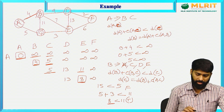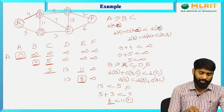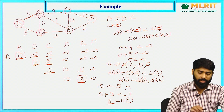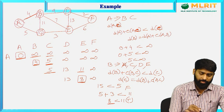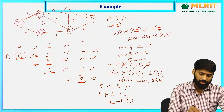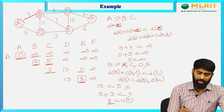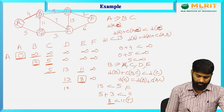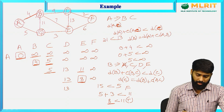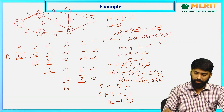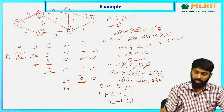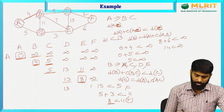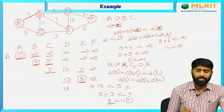E as source vertex. Adjacent vertices for E are B, C, F — C and B are visited. The remaining are D and F. Find distance of E to D: 8 plus 13 = 21, less than 13 — false. Do not update 13. For F: distance(E) plus cost(E, F) = 8 plus 6 = 14, less than infinity — true. Distance of F is 14 now. Mark E as visited.